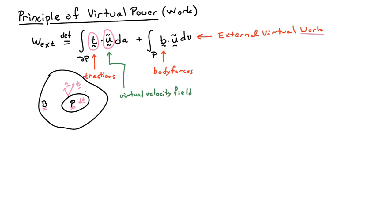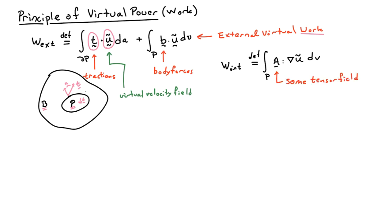The U tilde is the virtual velocity field — it's just some arbitrary vector-valued field over the body. We also need to define the internal virtual power, which is defined to be the gradient of the virtual velocity field double contracted with a tensor field, which I'll call A. So it's just some arbitrary tensor field, a function of position.